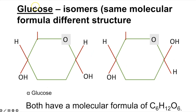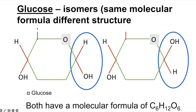Glucose has two isomers — the same molecular formula but different structures. Alpha glucose has hydrogen on top and hydroxyl on the bottom on both sides of the ring, making it roughly symmetrical. Beta glucose has the hydroxyl on top and hydrogen on the bottom. That slight change in position has a big impact on the types and locations of bonds that form when creating polysaccharides, and therefore the final shape of those polysaccharides.